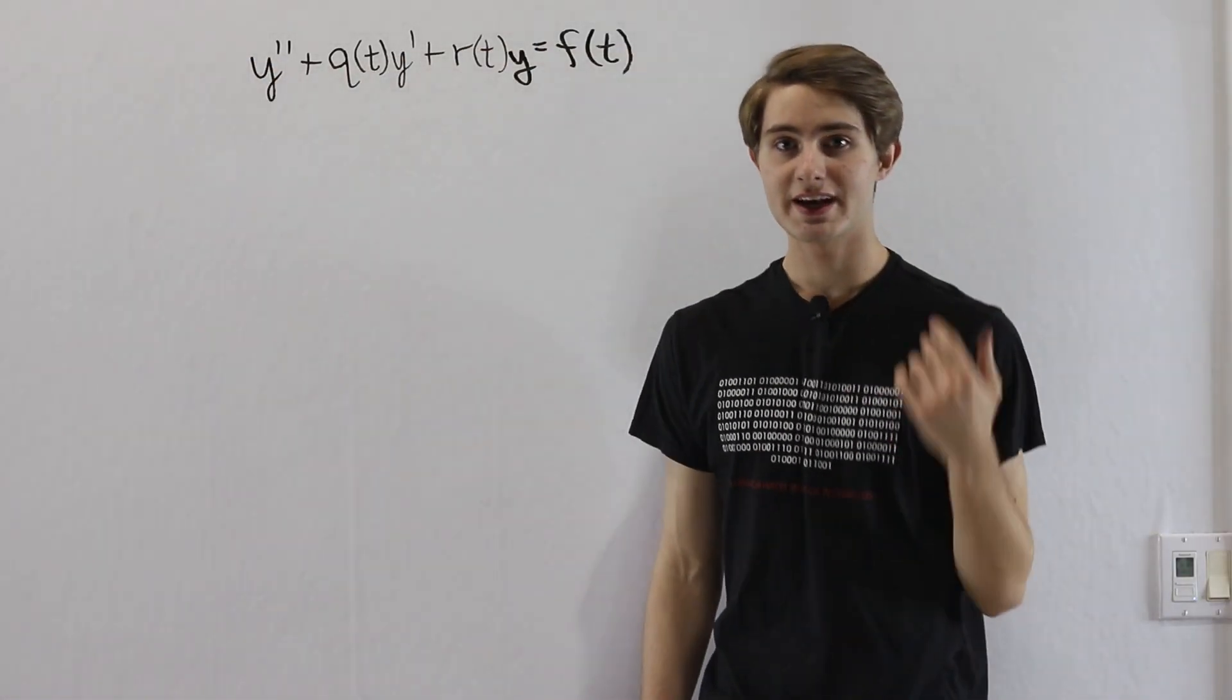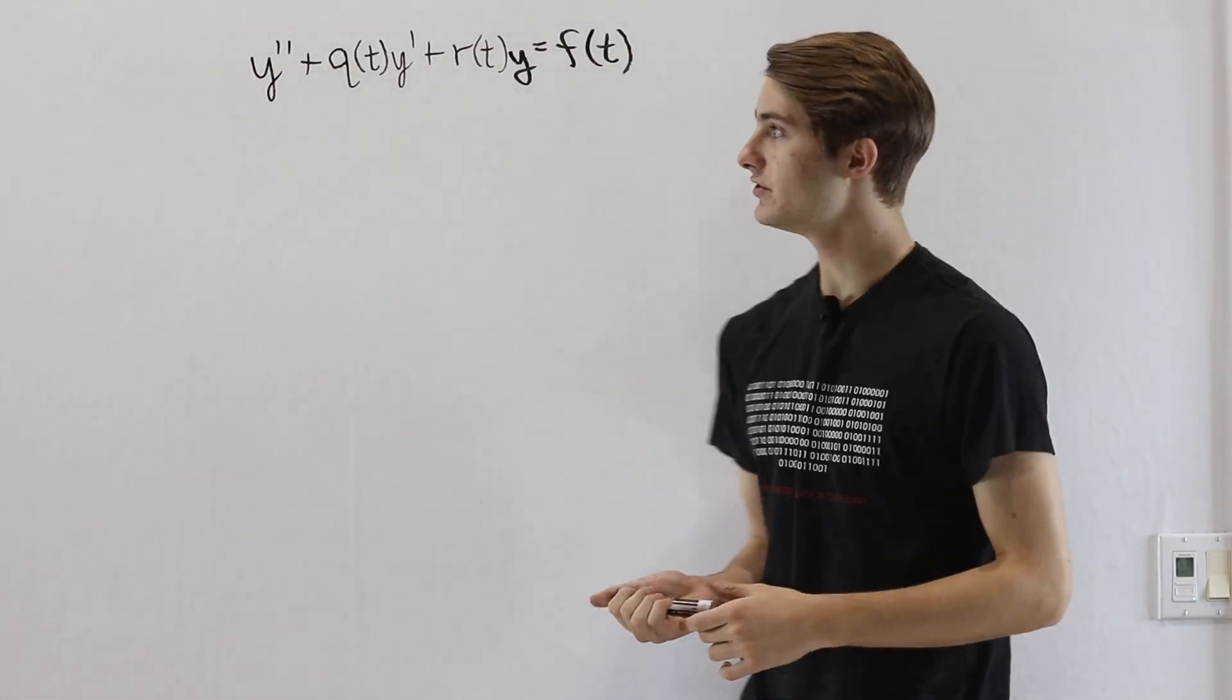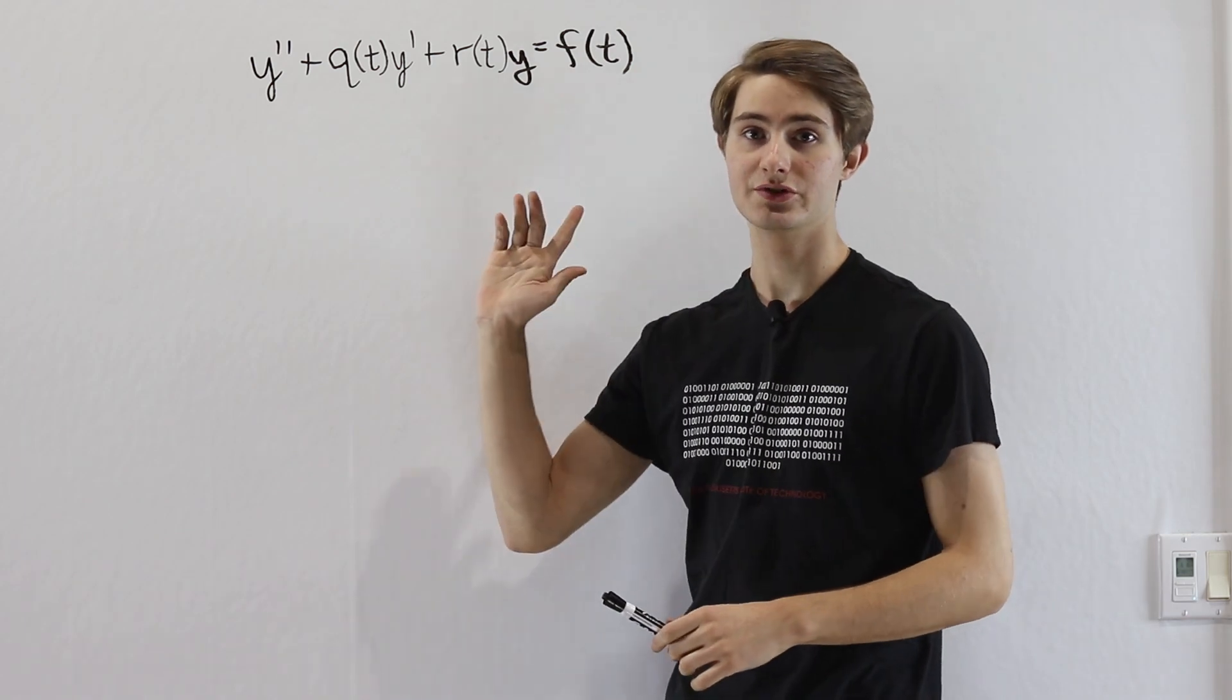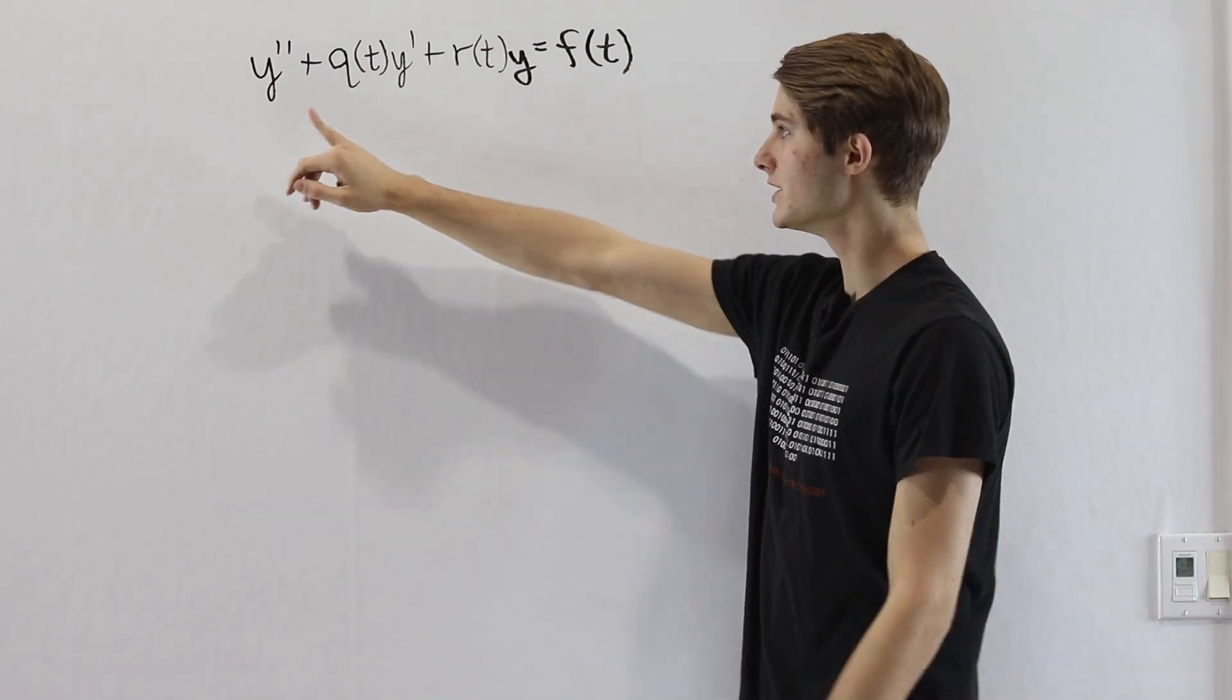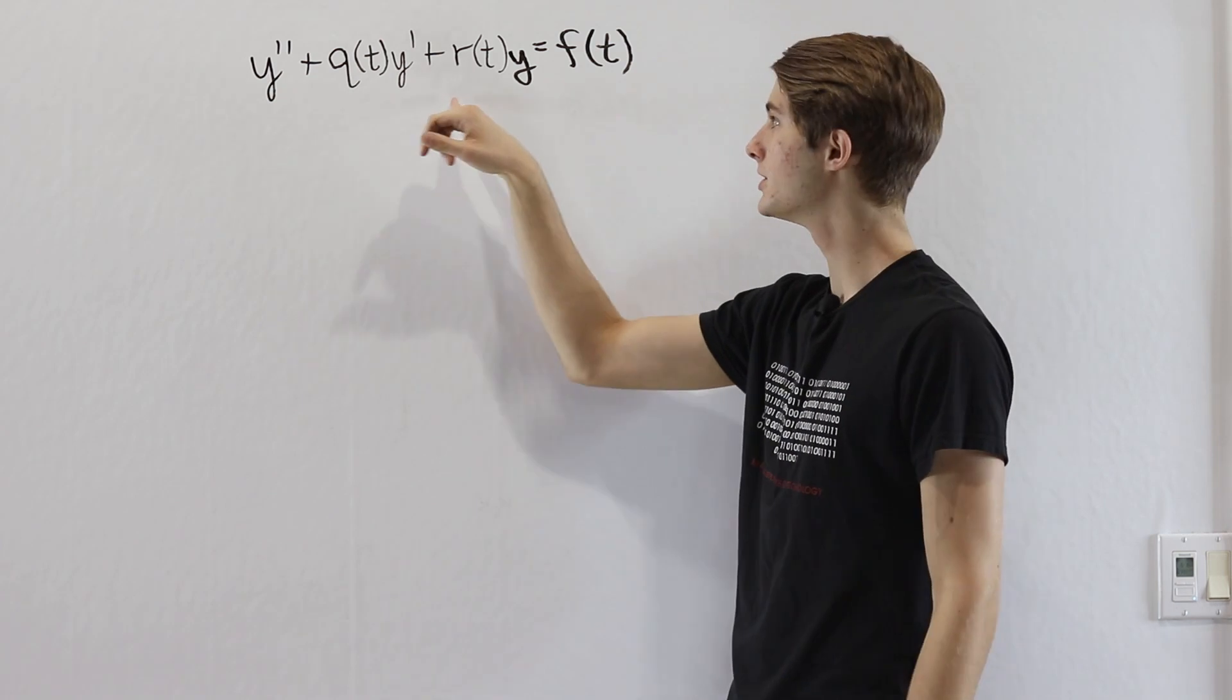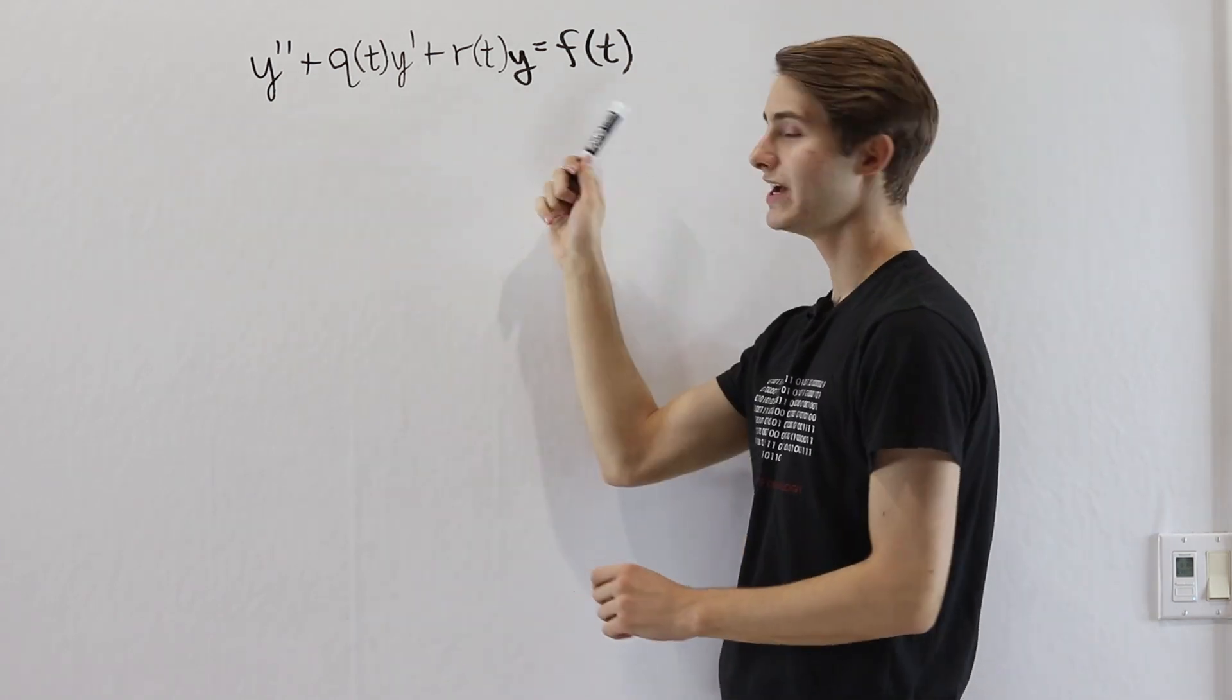We are going to learn how to solve second-order linear differential equations using variation of parameters. To do that, we'll look at this equation here: y double prime plus q(t)y prime plus r(t)y equals f(t).